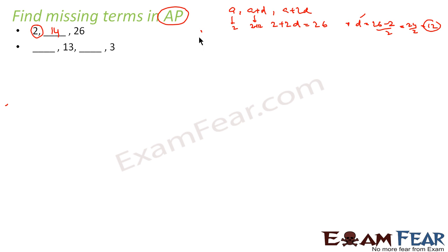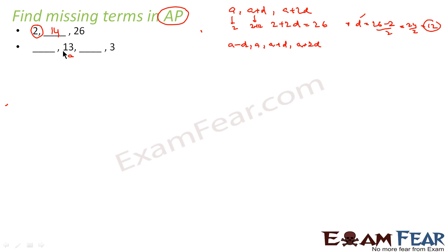Let's take one more example: _, 13, _, 3. In such a case, we can assume the second term as A. So if we assume this as A, the previous term becomes A minus D. The sequence is of the form A minus D, A, A plus D, A plus 2D. Since the value 13 is given, we assume A equals 13 for convenience.